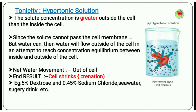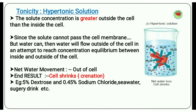Since the solute cannot pass the cell membrane but water can, water will flow outside of the cell in an attempt to reach concentration equilibrium between inside and outside. The net water movement is out of the cell, the cell shrinks in size, and that process is called crenation — crenation is the process where a cell shrinks. Examples of hypertonic solutions include 5% dextrose, 0.45% sodium chloride, sea water, and sugary drinks.